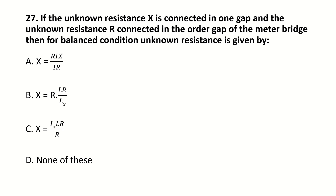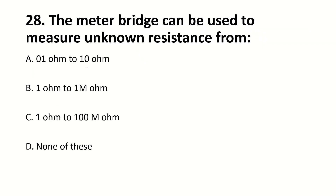For the balanced condition, unknown resistance is given by — blank. Right answer is D: X equals R times LR divided by LX. You can see and confirm if your notes are correct, then you can write it; if not, you can correct it. The meter bridge can be used to measure unknown resistance from — blank. Right answer is B: 1 ohm to 1 megaohm.